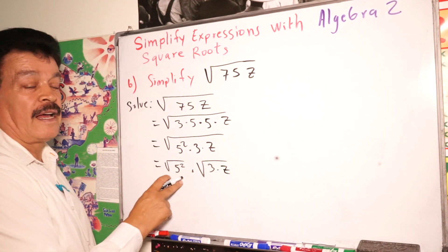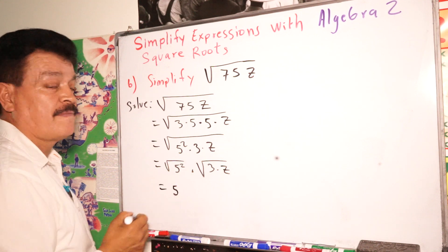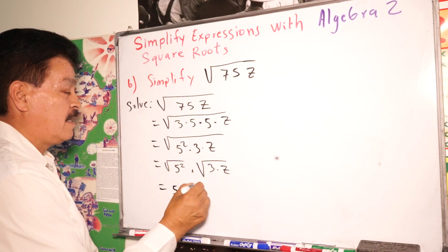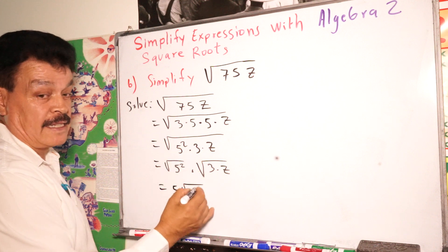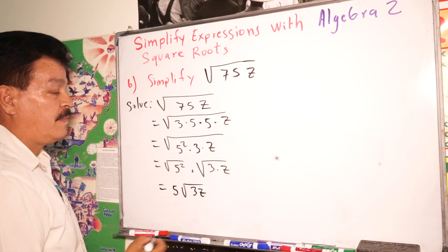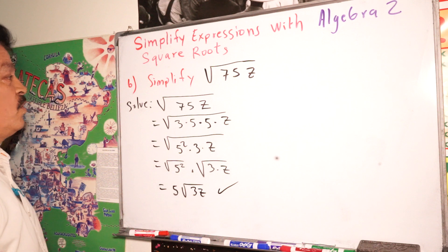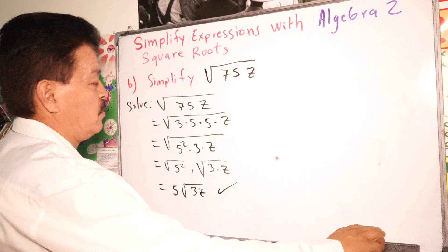So the answer is 5 times square root of 3Z. This is a solution for this problem. This way is to work expressions with the square roots.